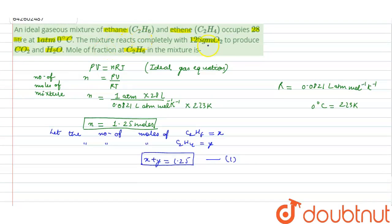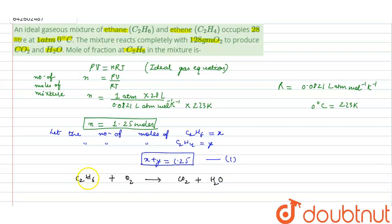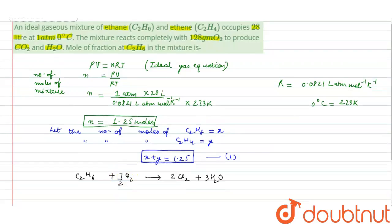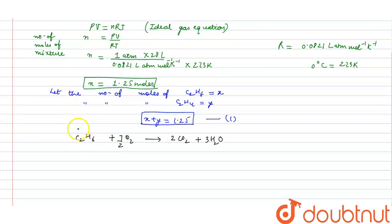The mixture reacts completely with 128 grams of oxygen to produce CO2 and water. For the combustion of C2H6 with O2: C2H6 + 7/2 O2 → 2CO2 + 3H2O (balanced equation). Since we assumed x moles of C2H6, it reacts with 7x/2 moles of oxygen.